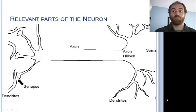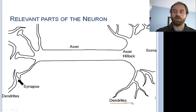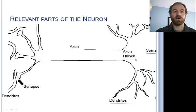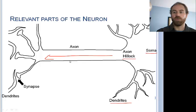Here we have a drawing of a neuron with its primary parts labeled. The dendrites, which receive the chemical messengers from other neurons. The cell body, or soma, which maintains the vital functions of the neuron. The axon hillock, where the integration of incoming messages takes place. And the axon, which sends a signal down its length to release chemical messengers to other neurons.